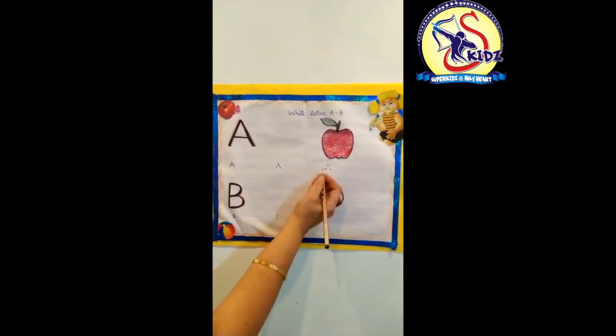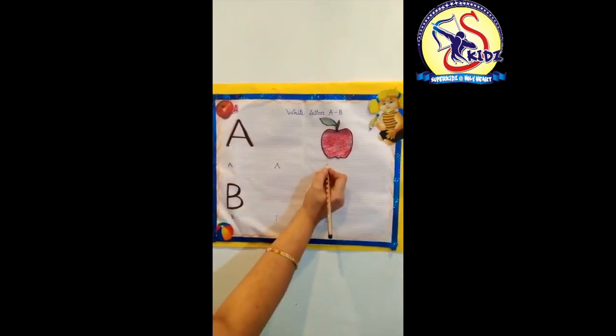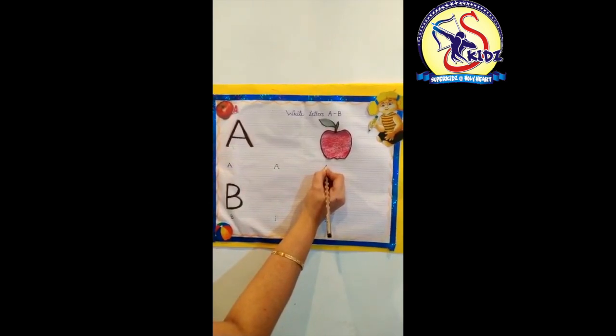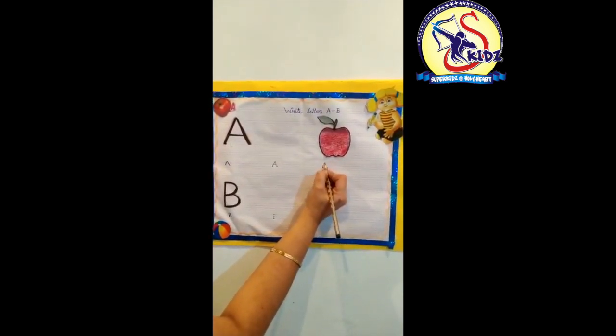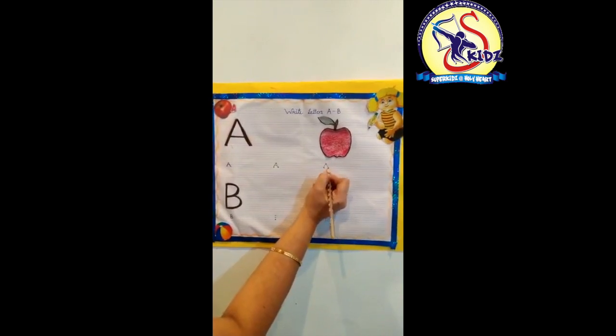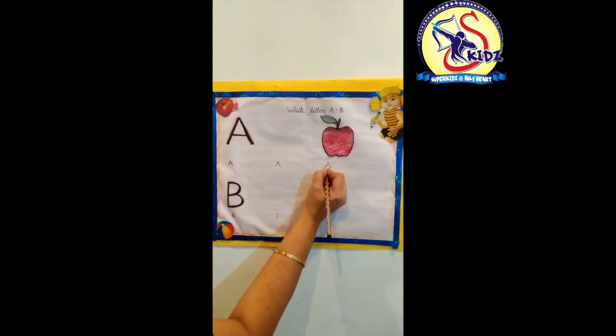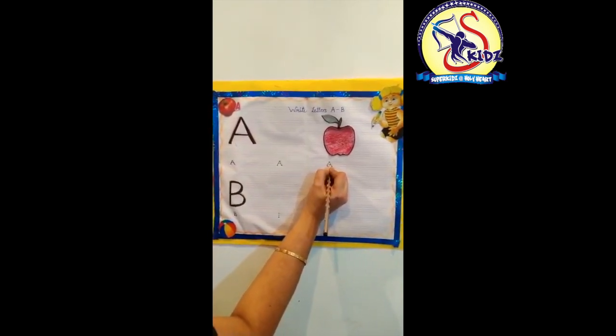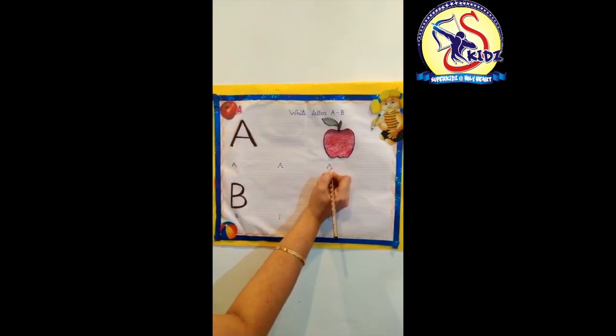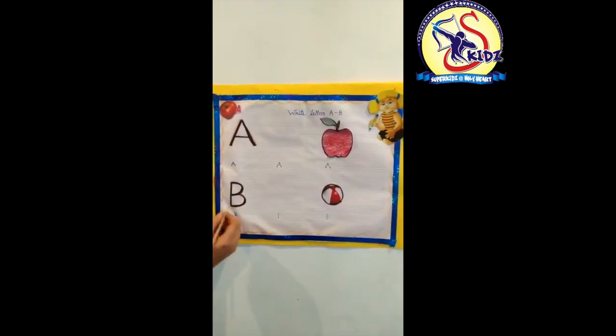Let's revise. How to write letter A? Make a slanting line. Again, slanting line. And sleeping line. And this is letter A. Now try next letter.